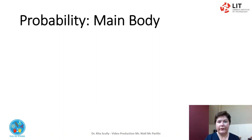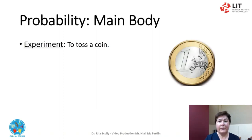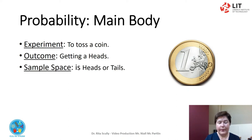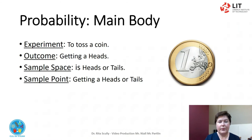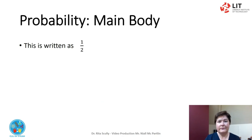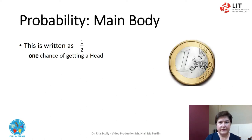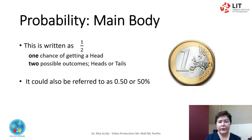Let's use some of our key words. Experiment: to toss a coin. Outcome: getting a heads. Sample space: heads or tails. Sample point: getting a heads or tails. Event: to toss a head. This is written as 1 over 2 — 1 chance of getting a head, 2 possible outcomes: heads or tails. This could also be referred to as 0.5 or 50%. It is often referred to as an even chance.